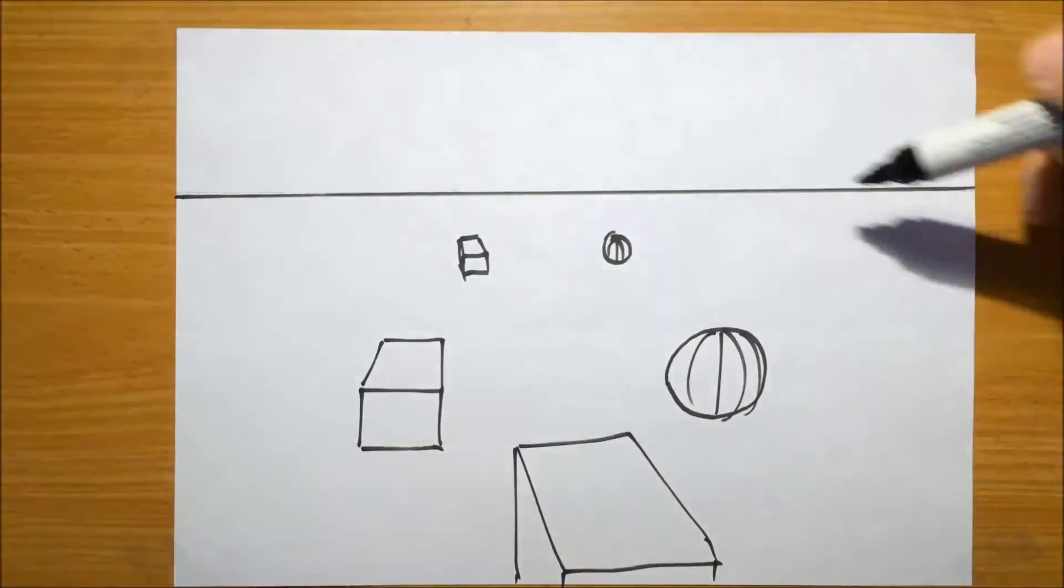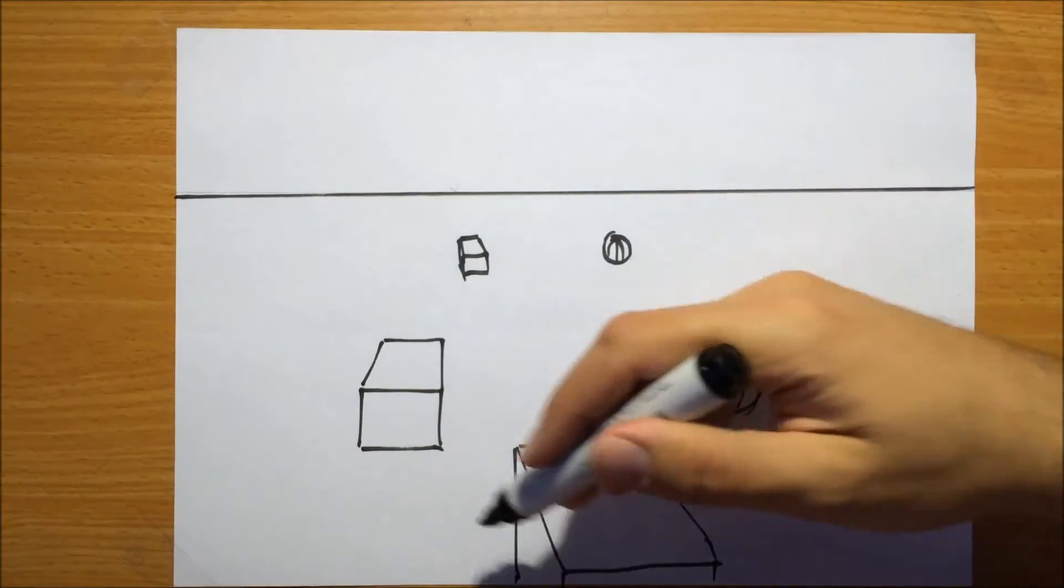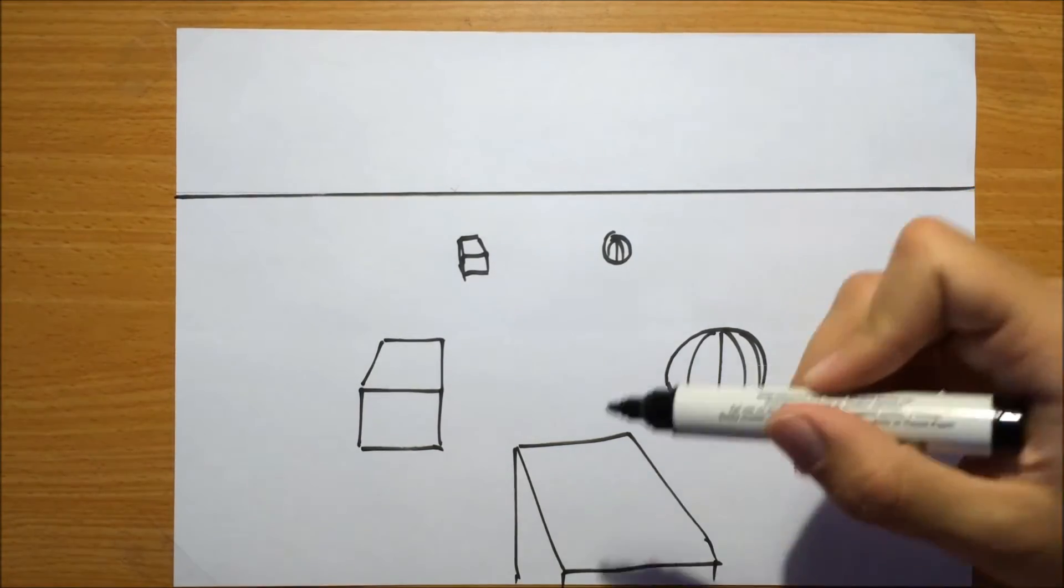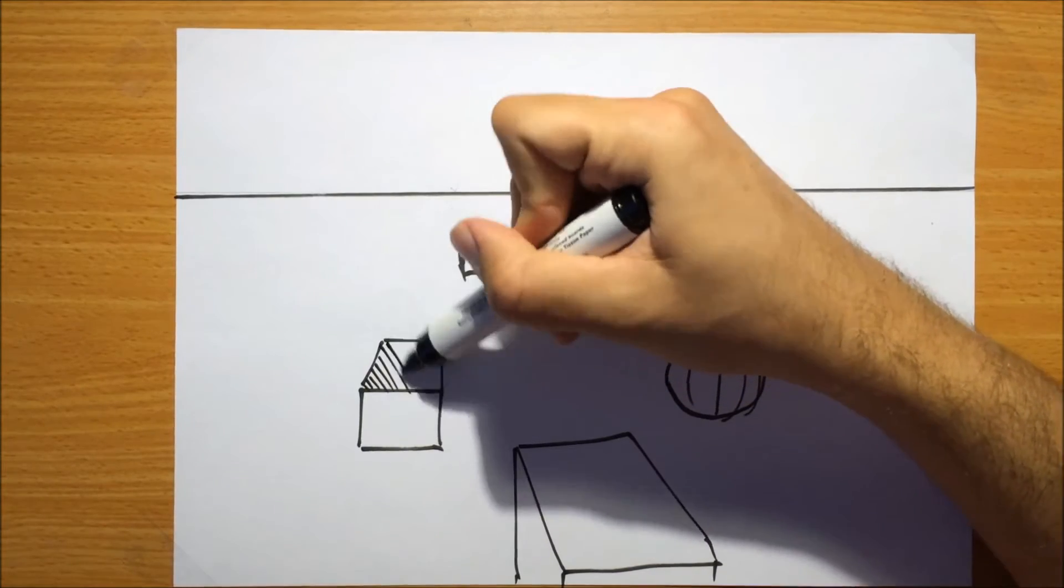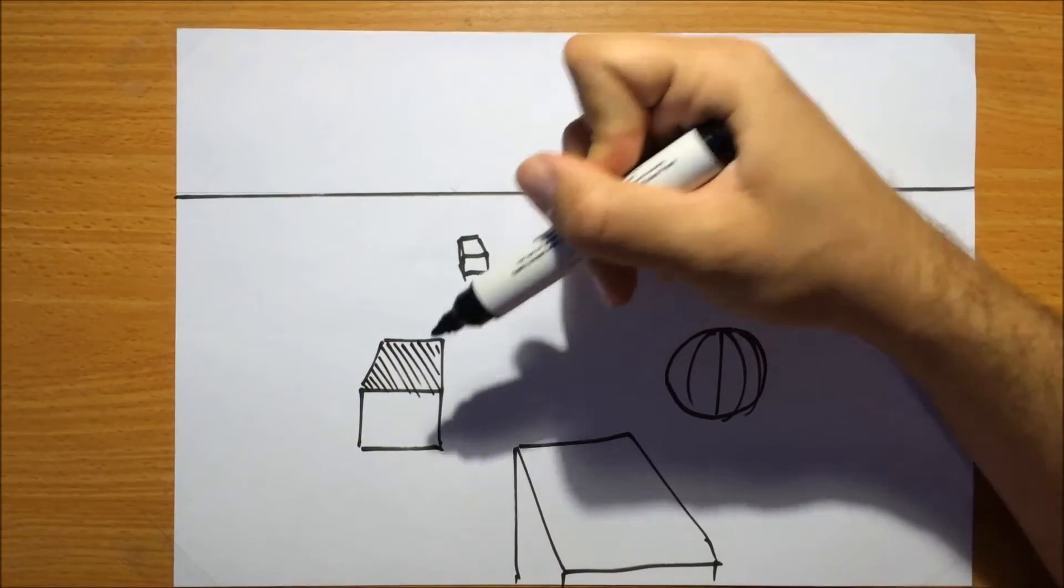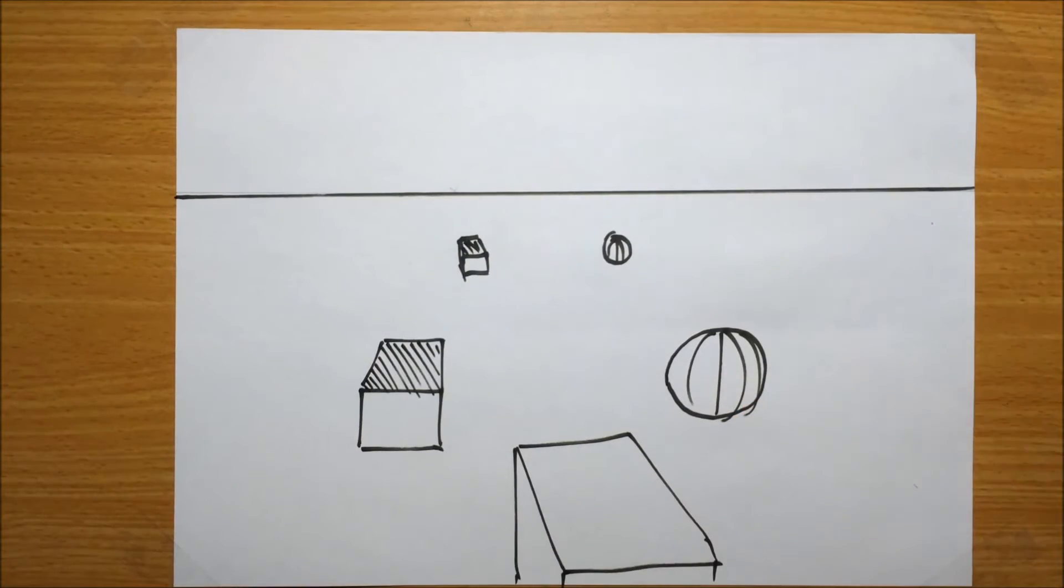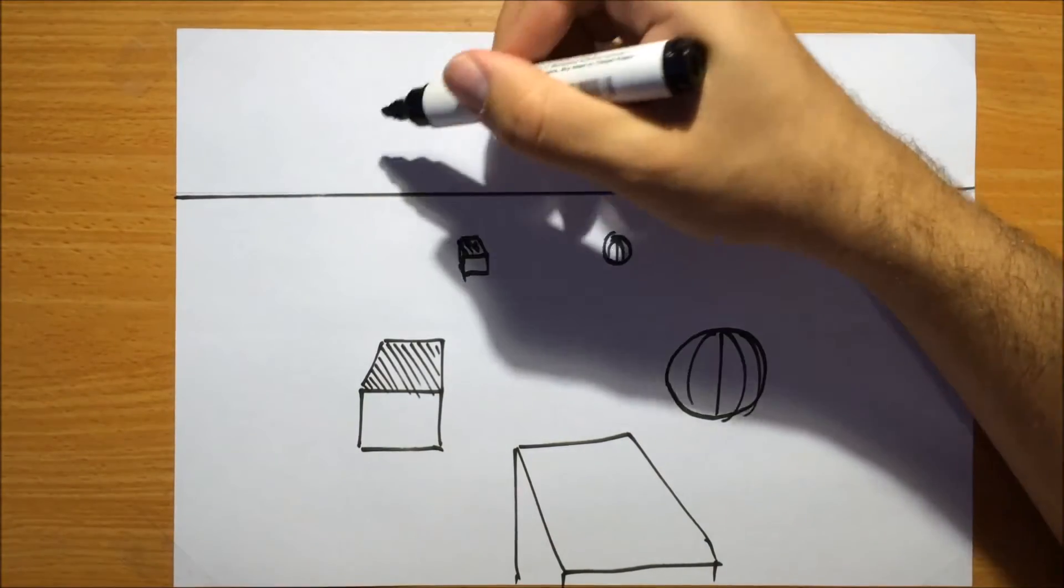So everything that's below, again, we look from above. Therefore, anything in this drawing, we are actually looking at from above, from a higher angle. This is why we can see the top side of the boxes here. This is the top side that we're looking at. And this is why we can see it here as well, because we're looking at it from above.